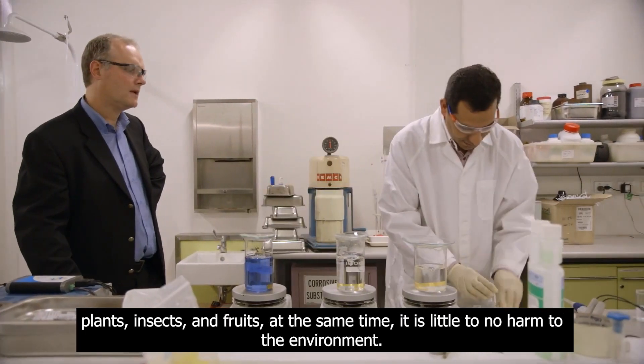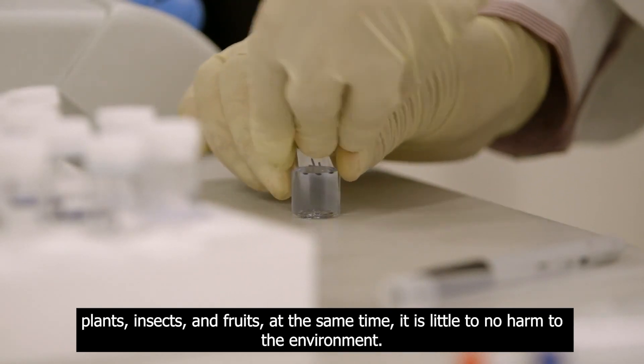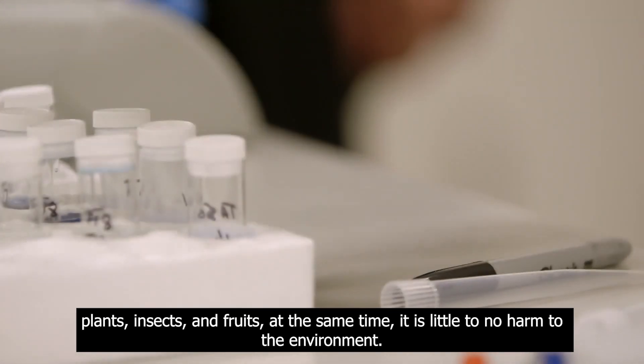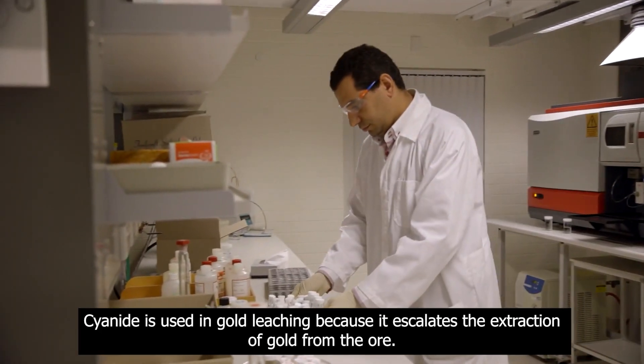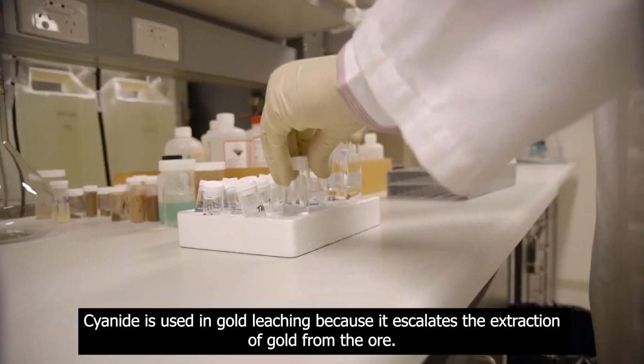because cyanide is a naturally occurring chemical where it can be found in nuts, plants, insects, and fruits. At the same time, it is little to no harm to the environment. Cyanide is used in gold leaching because it escalates the extraction of gold from the ore.